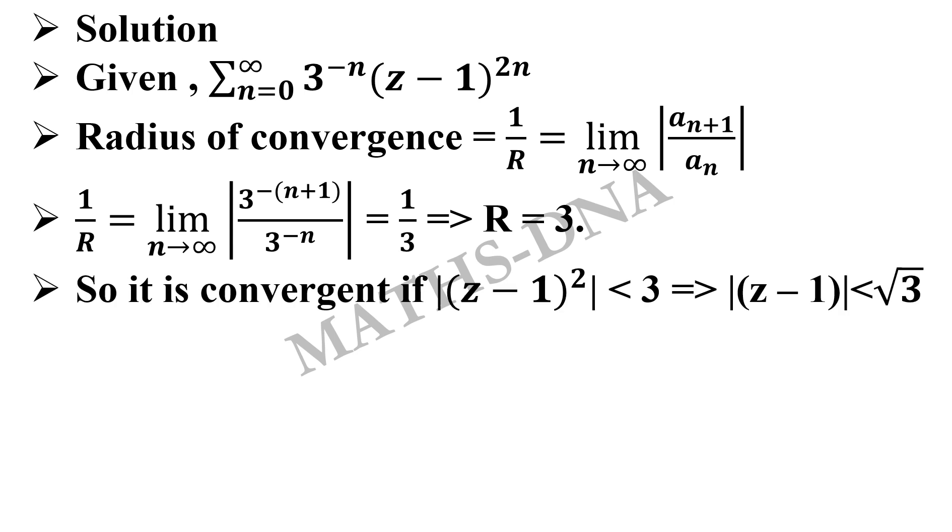So we have mod z minus 1 whole square is less than 3, which implies mod of z minus 1 is less than root 3. But we still need to check the convergence at z minus 1 whole square equals to 3.